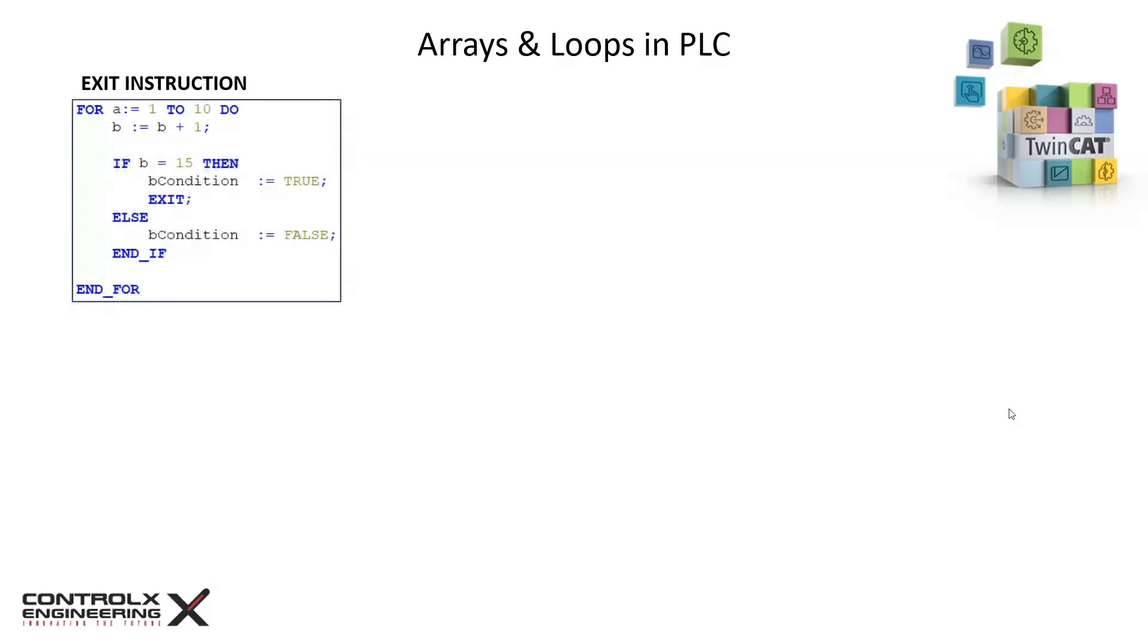In this example we have a for loop which increments variable a from 1 to 10 each PLC cycle. The instructions inside the for loop will repeat 10 times. I'm incrementing a variable b inside the loop, so at the end of each cycle b will have incremented by 10. However, I put an if condition to check when b equals 15, then set a variable b condition to true and exit. Otherwise condition stays false.